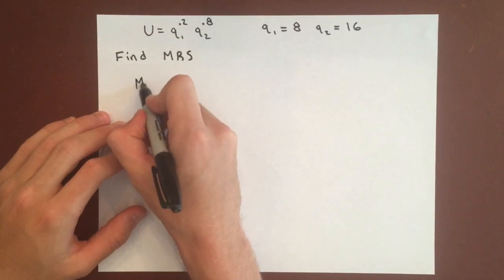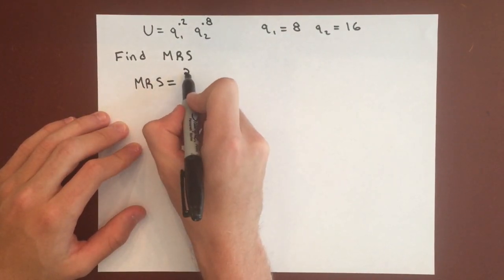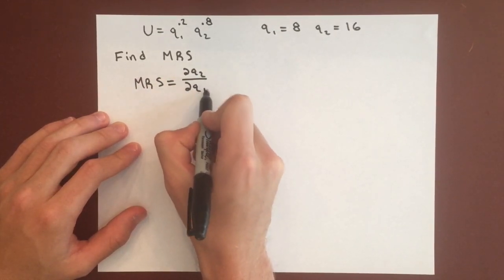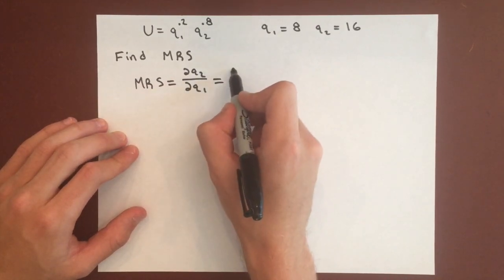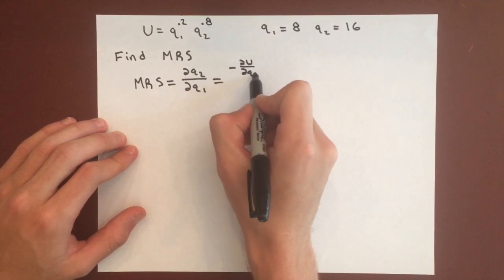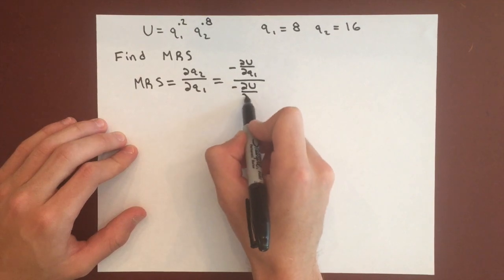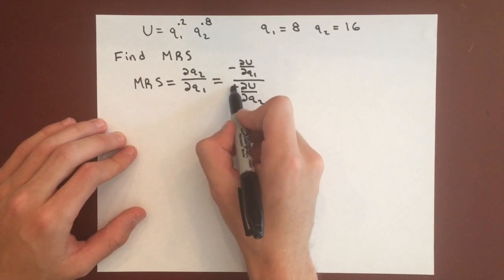So marginal rate of substitution, or MRS for short, has two equations: change in Q2 over change in Q1, or the negative marginal utility of Q1 over the marginal utility of Q2. Or, the whole thing's negative.